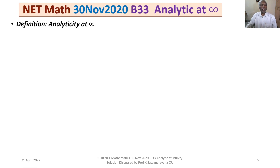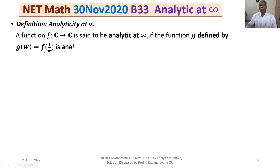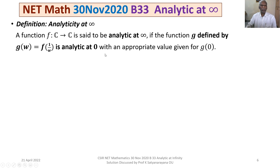We are given the definition of analyticity at infinity. A function f from C to C is said to be analytic at infinity if the function g defined by g(w) = f(1/w) is analytic at 0, with an appropriate value given to g(0). Now we start discussing the given problem.